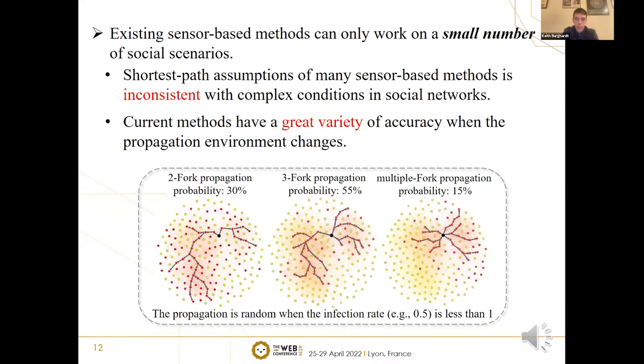Second, some existing propagation source-localization methods have limited application fields. More specifically, the Gaussian-based methods and the corresponding extended methods assume that the propagation spreads along the shortest path. Here show several possible propagation situations simulating from the same node when the infection rate of the propagation is 0.5. It can be seen that the propagation links are diverse and the propagation does not always spread along the shortest path. Therefore, it's difficult for Gaussian-based methods to effectively deal with so many different propagation scenarios.